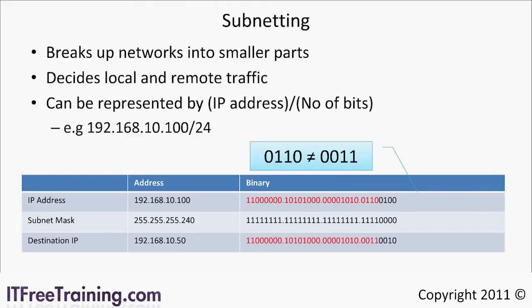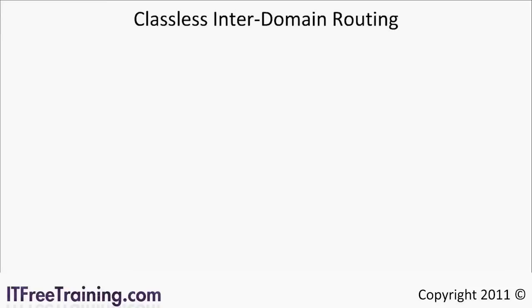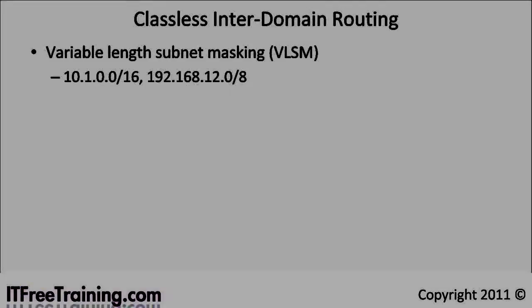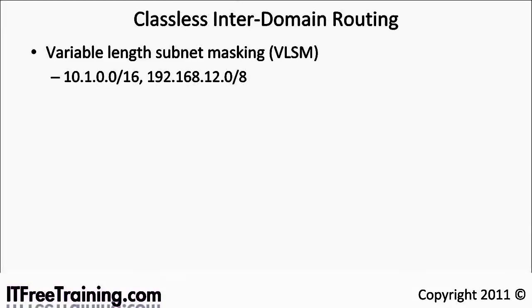Subnetting gives you a great deal of flexibility and power to break down larger networks into smaller ones. The trade-off is that you need to start doing some binary operations. Using subnetting you can break away from the limits imposed by classful addresses and divide a network up any way you want. This is called classless inter-domain routing. The subnet mask used is called variable length subnet masking. In the real world, classless inter-domain routing is the primary method used and classful networks are a thing of the past.